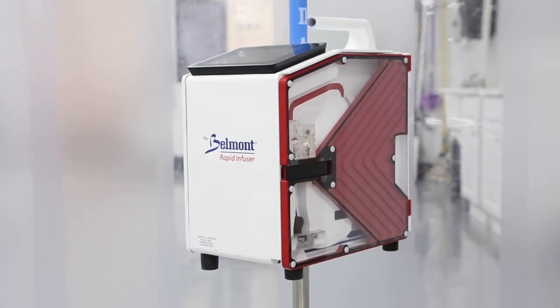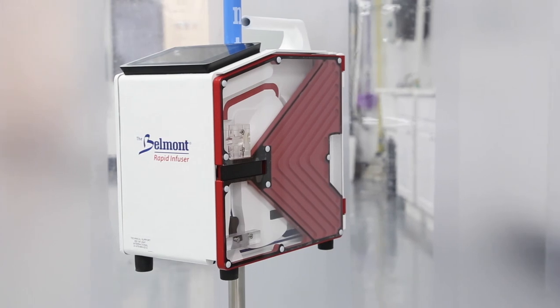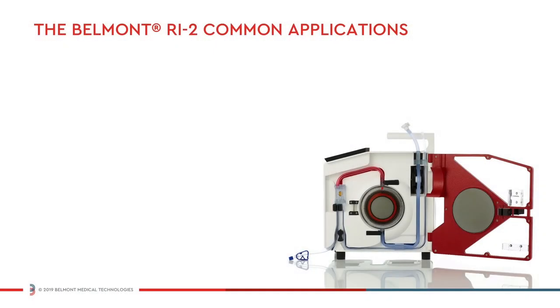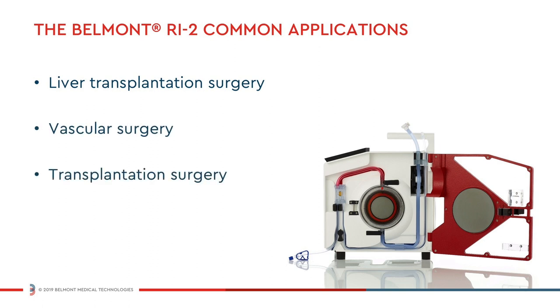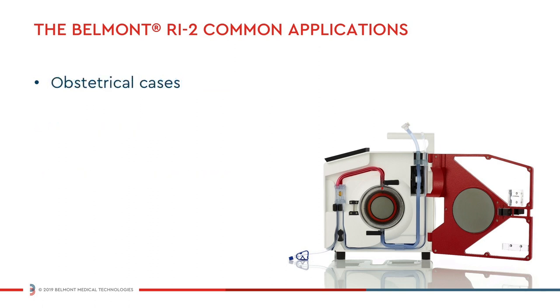The Belmont Rapid Infuser RI2 is a self-contained fluid management system. Common applications include liver transplantation surgery, vascular surgery, transplant surgery, complicated obstetrical cases, aneurysm repairs, and trauma.